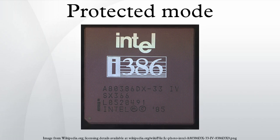As the cost of memory decreased and memory use increased, the 1 megabyte limitation became a significant problem. Intel intended to solve this limitation, along with others, with the release of the 286.